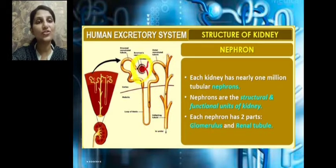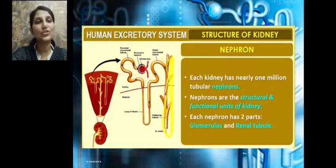This cup-like structure is called the glomerulus, and this tube-like structure is called the renal tubule.